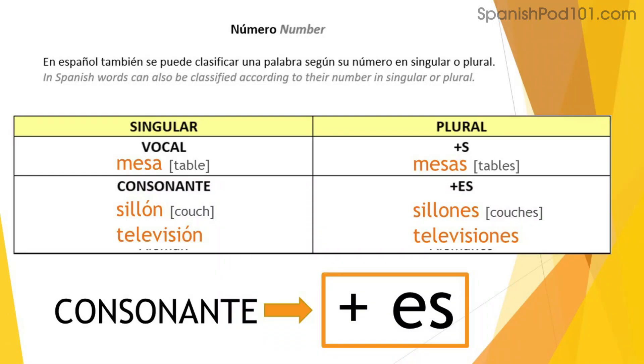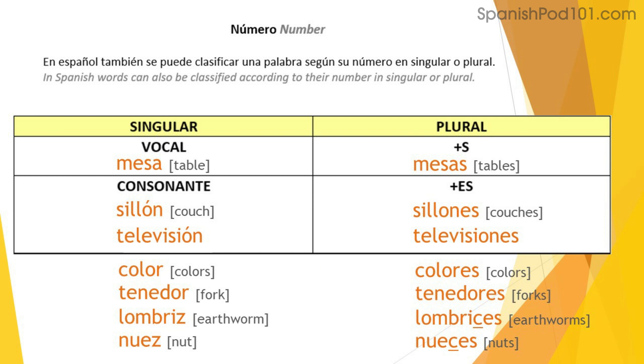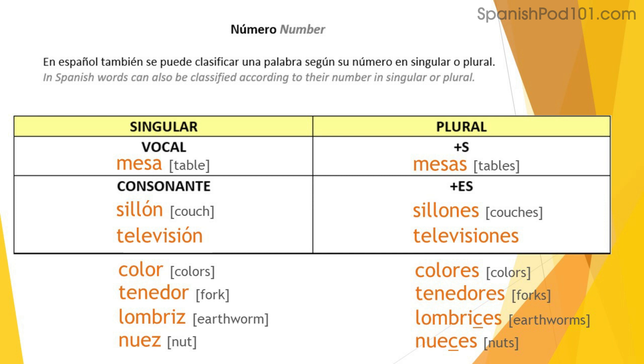And if the noun — el sustantivo — ends in a consonant, then we're going to add ES at the end to make it a plural form. Let's have a look at some examples: sillón becomes sillones, televisión becomes televisiones, color becomes colores, tenedor becomes tenedores, lombriz becomes lombrices, nuez becomes nueces. Pay attention to those last two — they ended in Z, but when we put them in plural form, that Z transforms into a C. So whenever you have a Z in the singular form, in the plural we change that Z for a C, then add ES at the end.